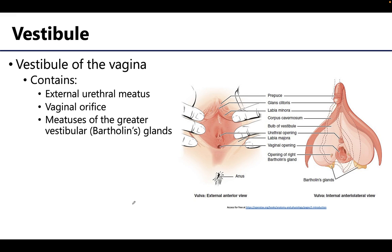The vestibule of the vagina, more commonly just referred to as the vestibule, is the cavity between the labia minora. The vestibule contains the external urethral meatus as well as the vaginal opening or orifice. Also located here are the meatuses or openings of the greater vestibular glands, also known as Bartholin's glands.